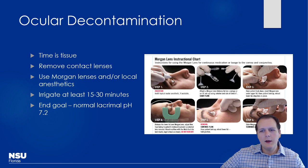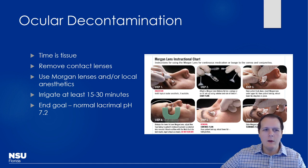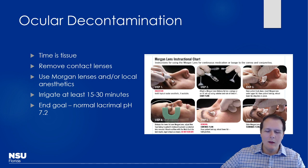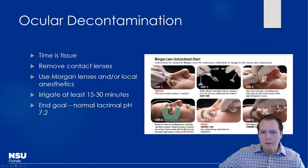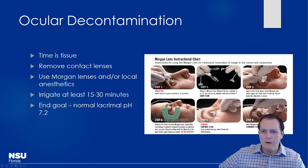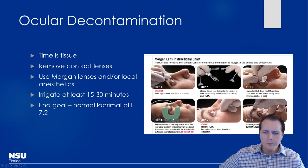For ocular decontamination, many substances can be quite caustic to ocular tissue — time is tissue, so initiate this quickly. Remove contact lenses immediately as they can serve as a reservoir for further drug exposure. A Morgan's lens is a neat product — first anesthetize the patient's eyes with something like tetracaine, then hook the lens up to a liter of saline on an IV set and place it in the patient's eye to continuously irrigate and flush the substance out.